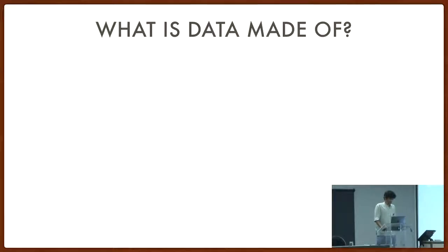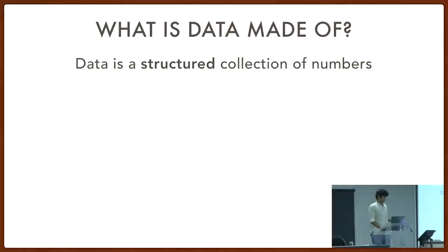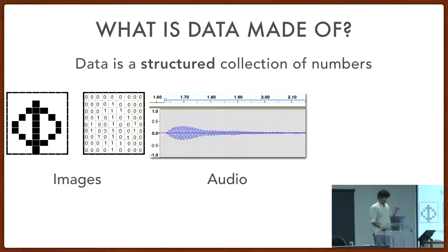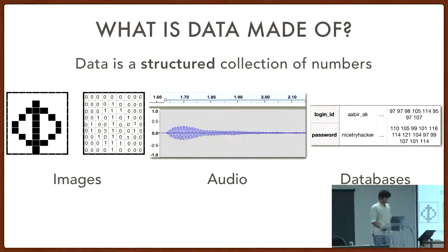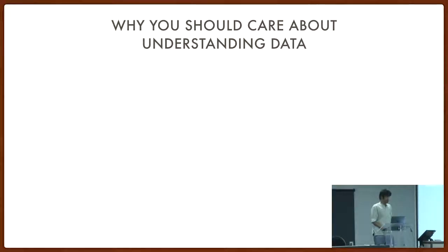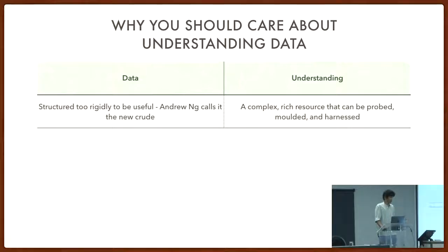So what is data made of? It's basically just numbers. You can have an image which is pixels, an audio signal which is different amplitudes and frequencies, or a database. But the structure can get really complicated, so it's important to understand what the data means — what all of these numbers at the ground reality actually mean. Data doesn't tell you anything on its own; it just exists.